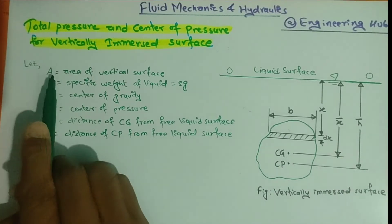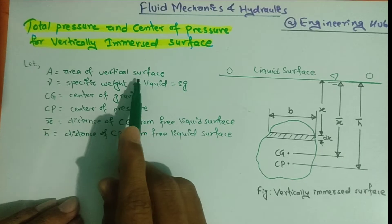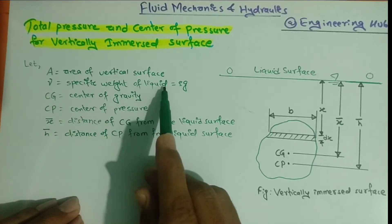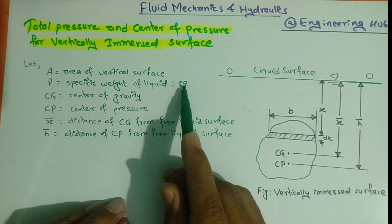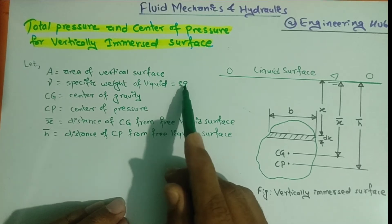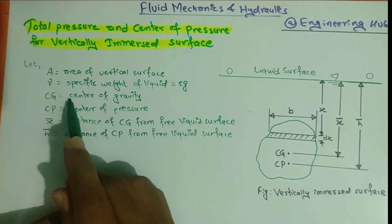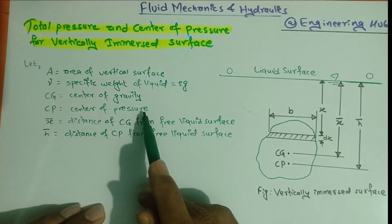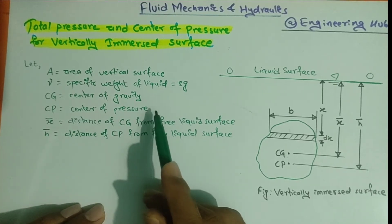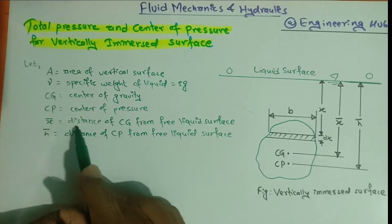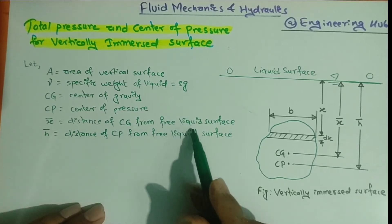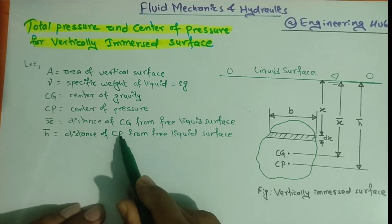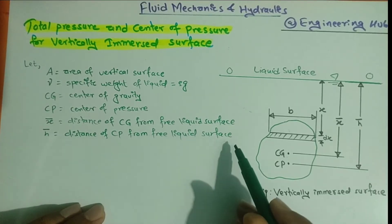Here are some assumptions: A is the area of the planar surface; gamma (γ) is the specific weight of the liquid, equal to the product of density and acceleration due to gravity; CG is the center of gravity; CP is the center of pressure from which the total pressure acts; x̄ is the distance of CG from the free liquid surface; and S̄ is the distance of center of pressure from the free liquid surface.